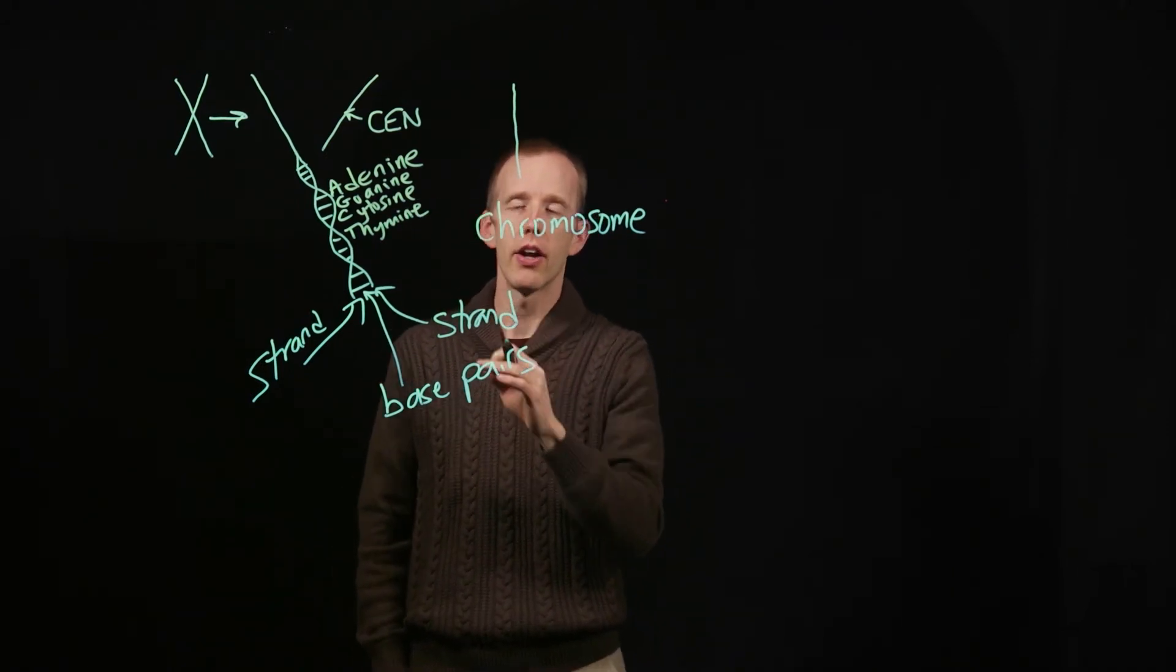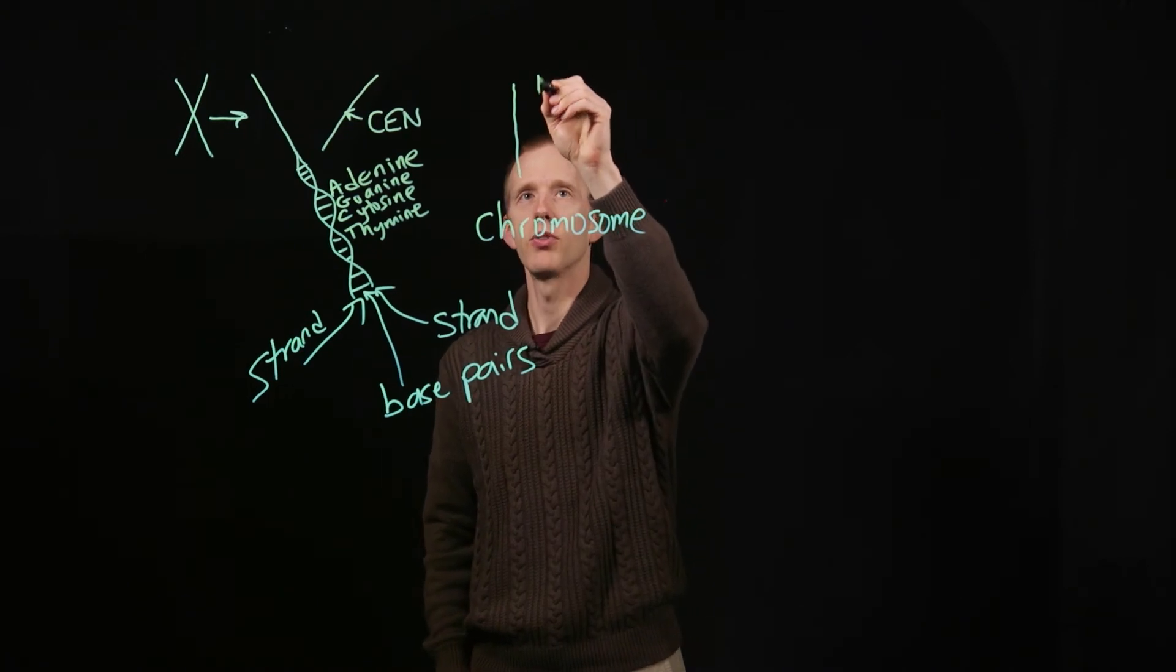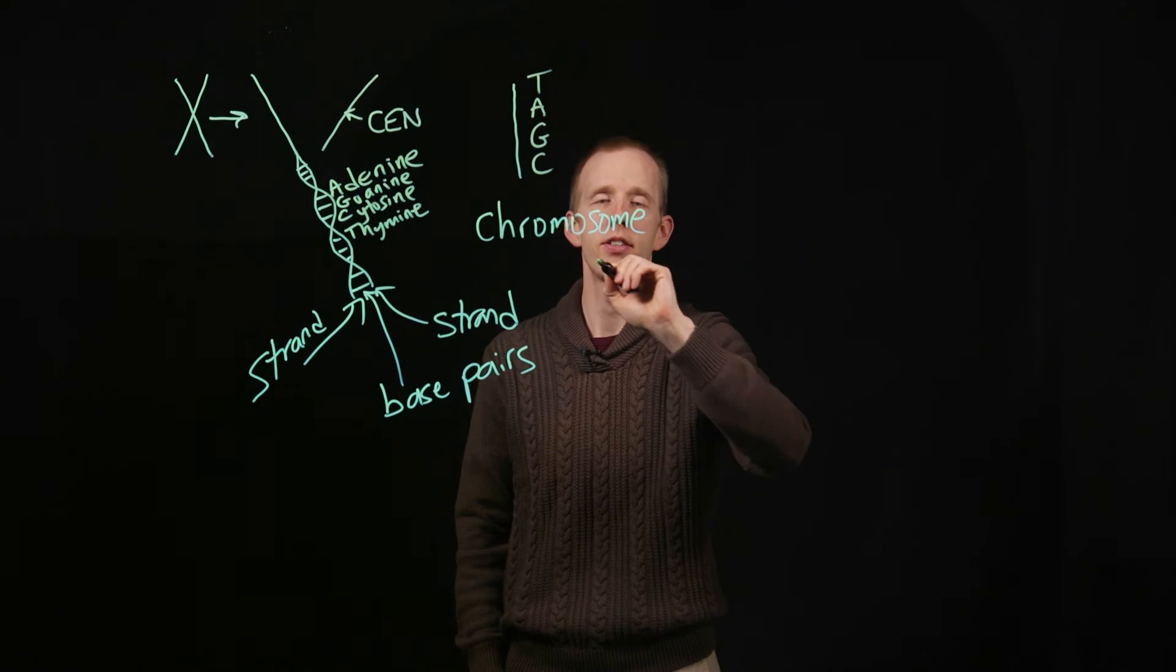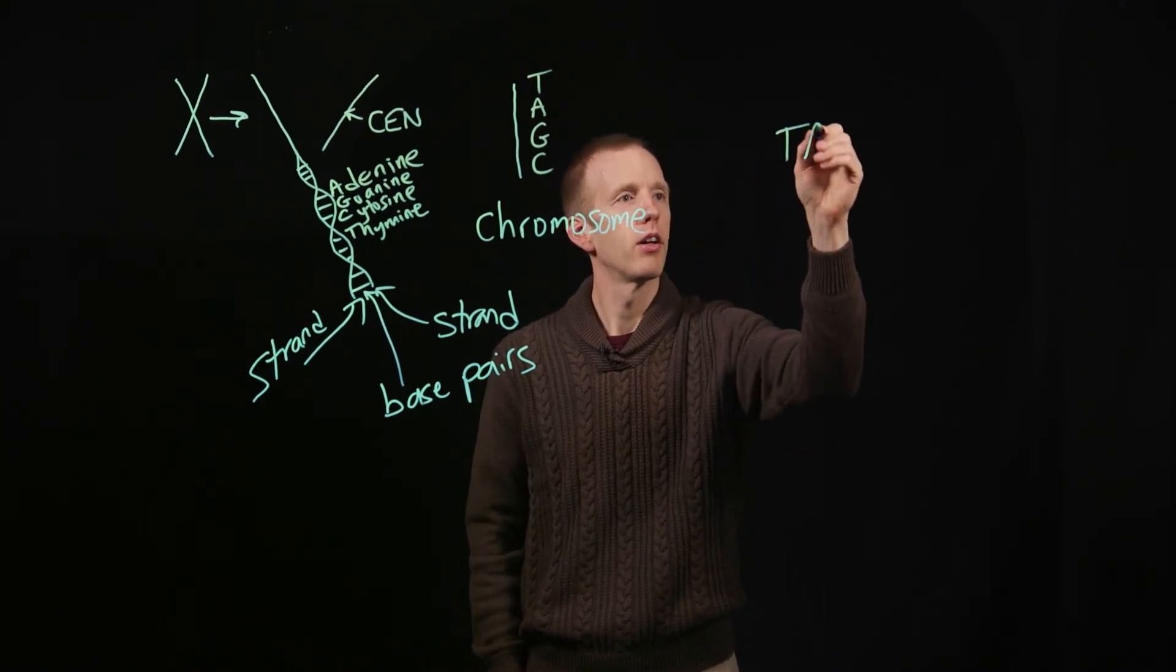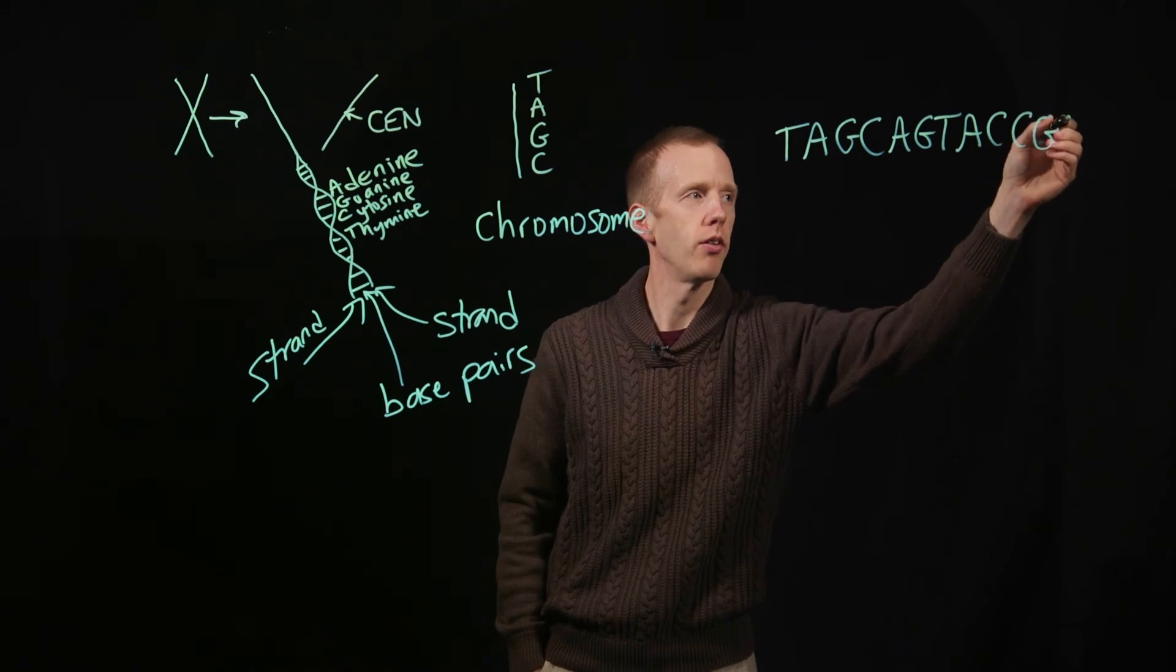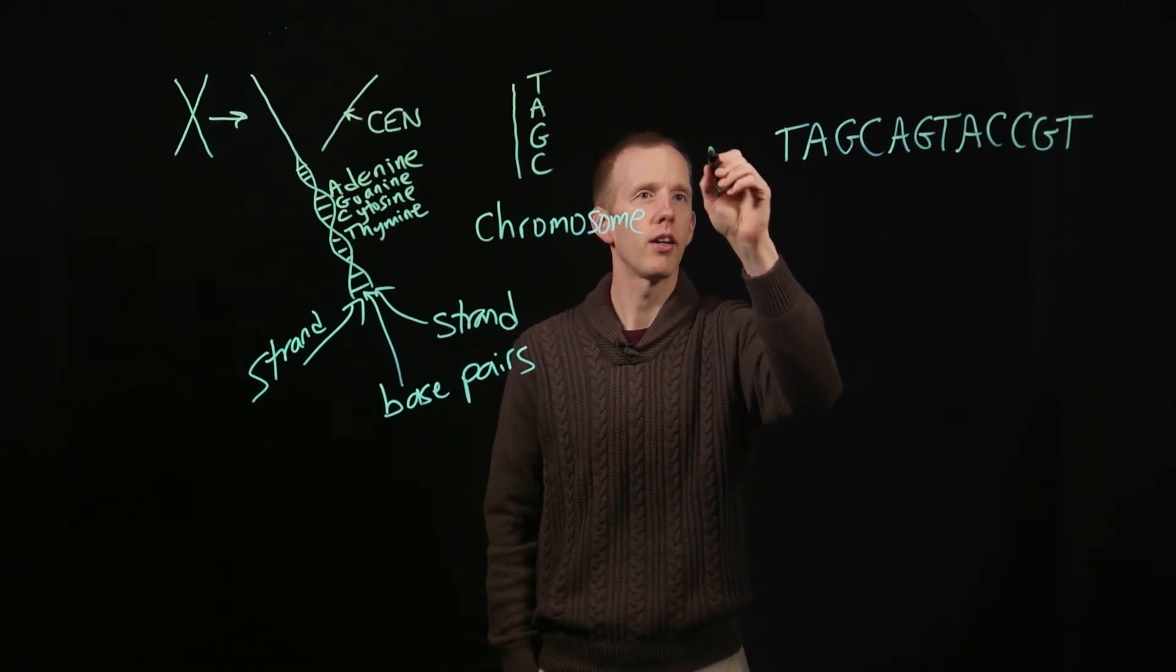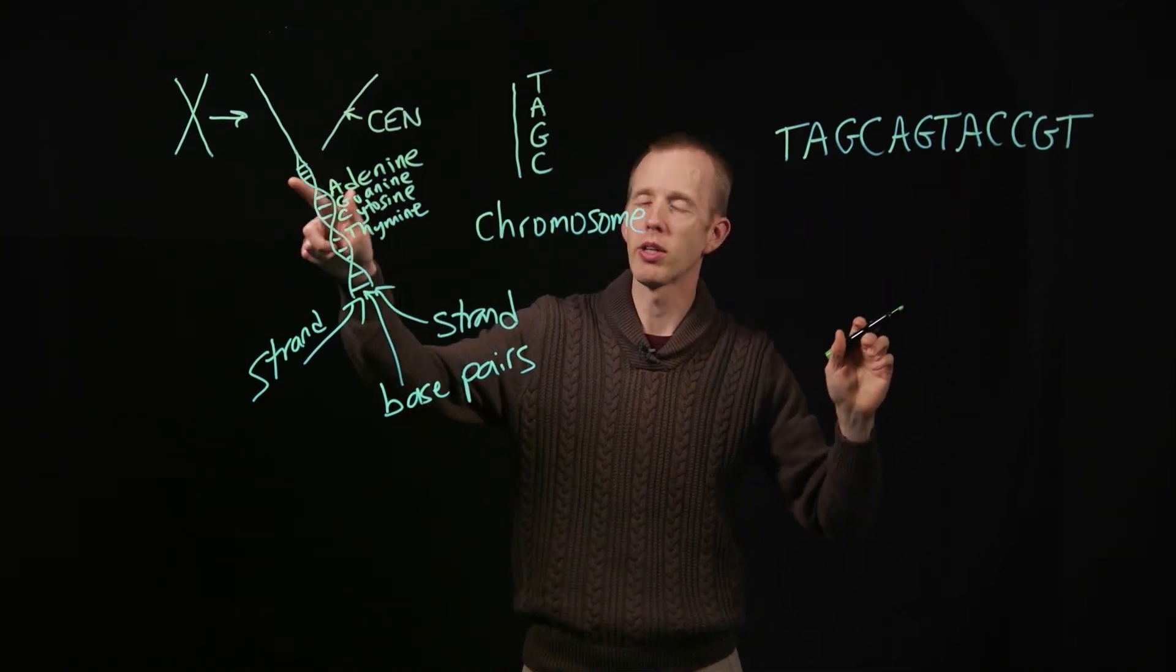And when we write out the letter sequence of a DNA molecule such as this, we often use single letter abbreviations, T's, A's, G's, and C's. So I could, for example, write this as the sequence of nucleotides, a random sequence of nucleotides, on one molecule of DNA, one chromosome. But this is only the sequence of one of these strands of the double helix.